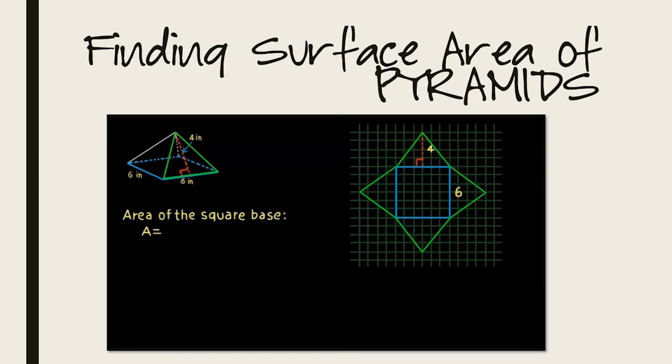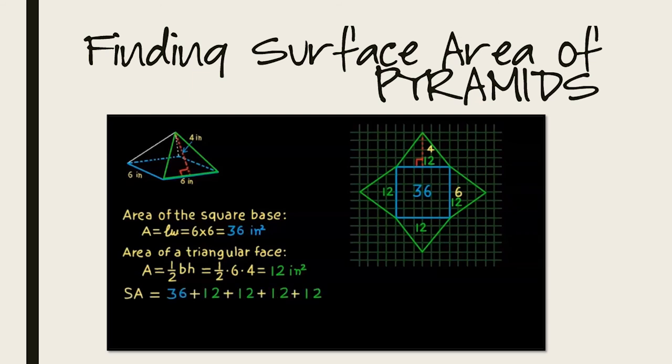The base is a square. Its area is its length times its width. 6 times 6 equals 36 square inches. Next, we'll find the area of a triangular face. To find the area of a triangle, we use the formula 1 half times the base times the height. So, we calculate 1 half of 6 times 4. Which means each triangle has an area of 12 square inches. Now all we have to do is add the areas to find the surface area. And we find that the surface area is equal to 84 square inches.